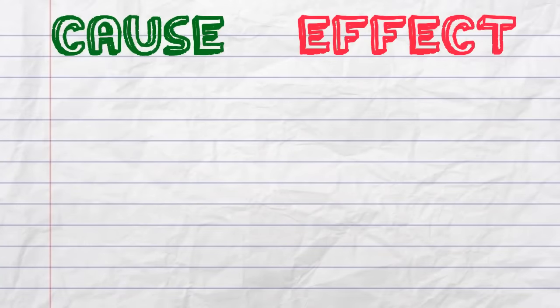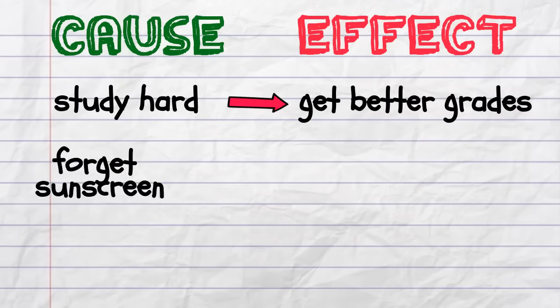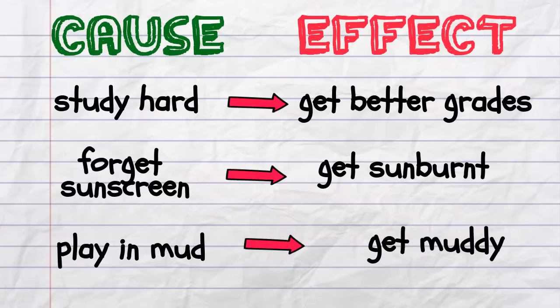Cause and effect relationships occur every day. For example, if you study hard, you'll get better grades. Forget to use sunscreen on a hot day, you'll get sunburnt. Play in the mud, get muddy.